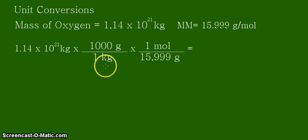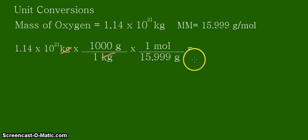We apply the first conversion factor to convert the kilogram unit into grams: 1,000 grams per 1 kilogram, so the unit kilogram cancels out, leaving us with grams. Then we apply the second conversion factor — 15.99 grams of oxygen per mole of oxygen — so the unit grams cancels out, and we're left with the unit moles of oxygen atom.